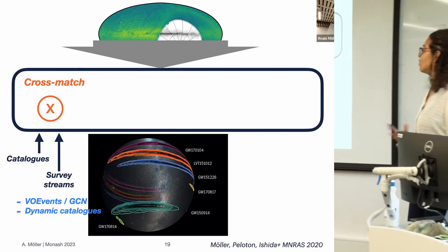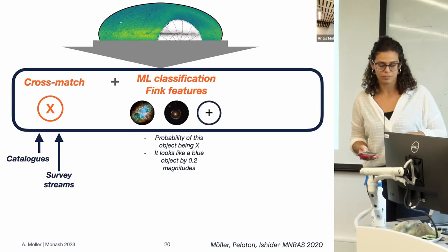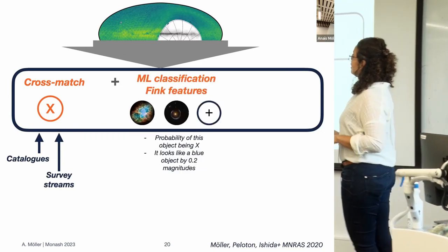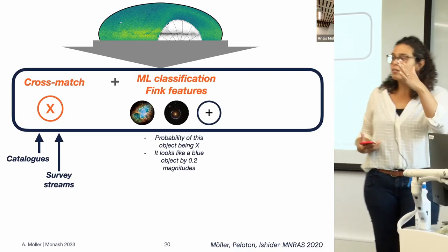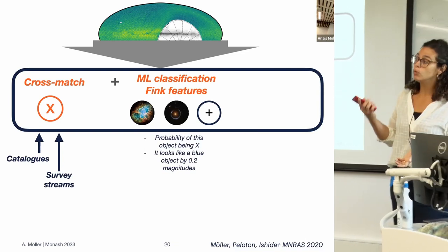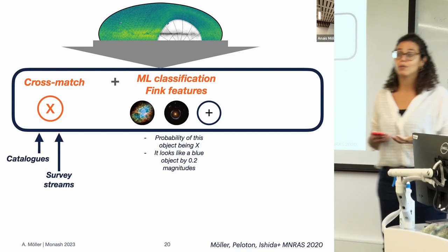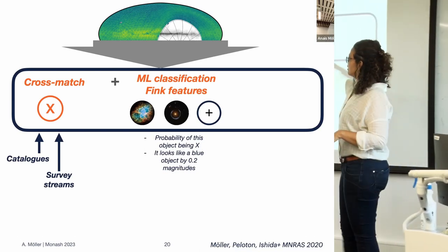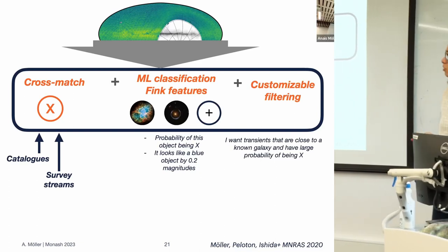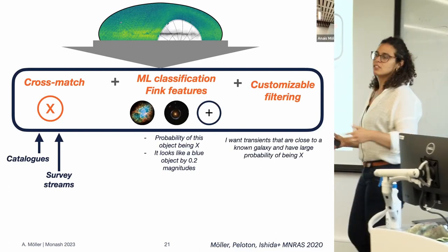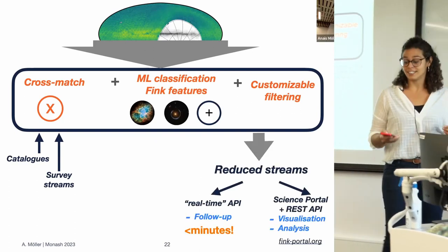These alerts can also be cross-matched with survey streams: gravitational wave footprints from LIGO, Virgo, KAGRA, VOE events, GCN notices — anything you want to work with. You can also enrich the information by asking: is this object rising in luminosity or fading away, is it blue? Maybe the probability of it being a kilonova is high or an asteroid. We have all these enrichments, especially machine learning classification, and then you can say 'I want objects that are blue, rising, near a galaxy' and access them.